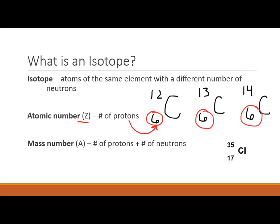What has changed is the top number: 12, 13, and 14. That's the mass number, sometimes abbreviated A — the number of protons plus neutrons. So if carbon has 6 protons and a mass number of 12, then 12 minus 6 equals 6 neutrons. Carbon-13 has 13 minus 6 equals 7 neutrons. Carbon-14 has 14 minus 6 equals 8 neutrons. Same number of protons, different number of neutrons, therefore they have different masses.